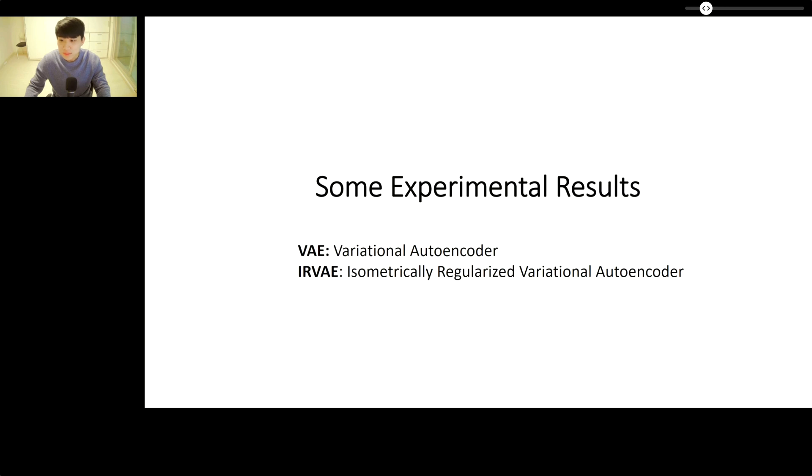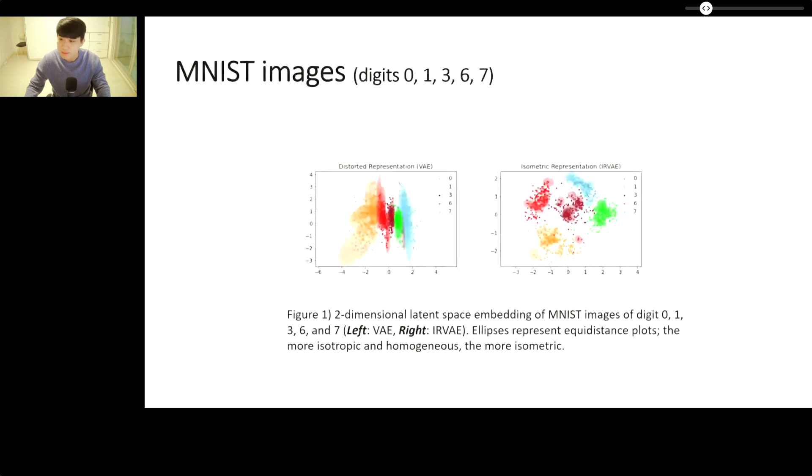Now, we share some experimental results. Figure 1 shows two-dimensional latent space representations of MNIST images of the digits 0, 1, 3, 6, 7. It can be seen that IRV produces more homogeneous and circular-shaped ellipses, implying that the representation is more isometric. Observe that the clustering is much more discriminative in the representation space generated by our IRV algorithm.